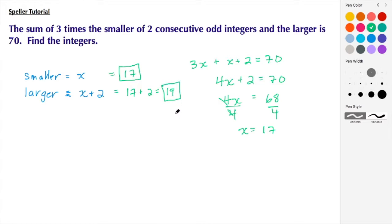the correct answers to satisfy this word problem, let's do a check based on what was given. We need to multiply three times the smaller odd integer, so in